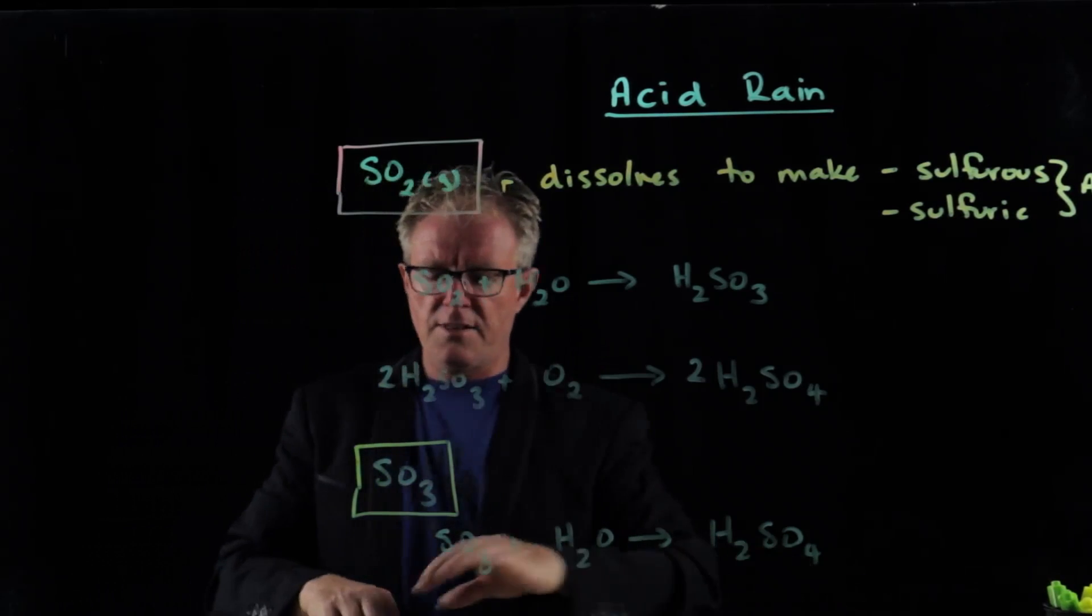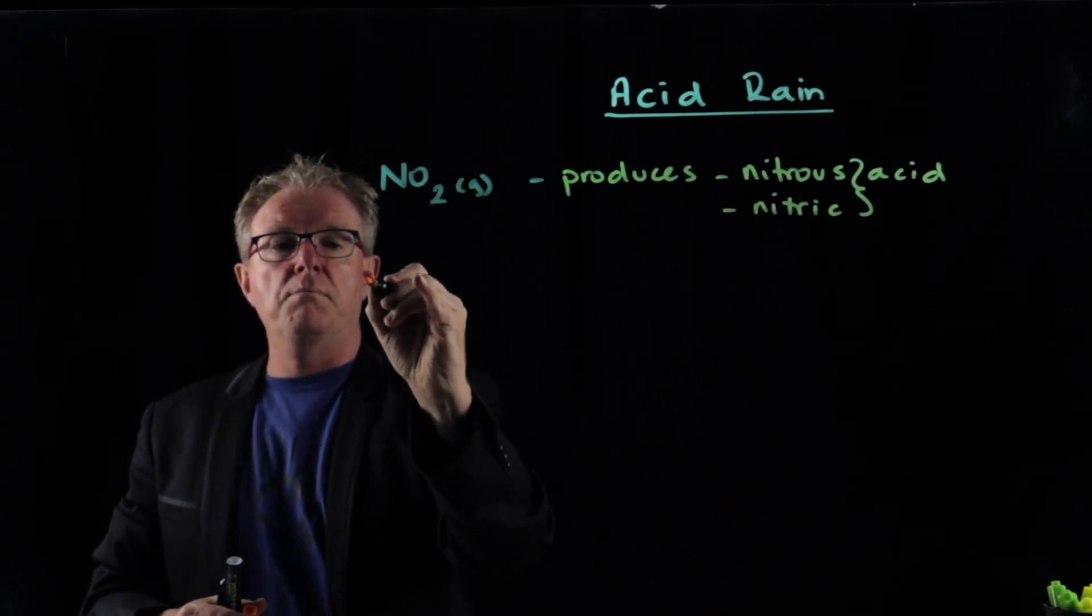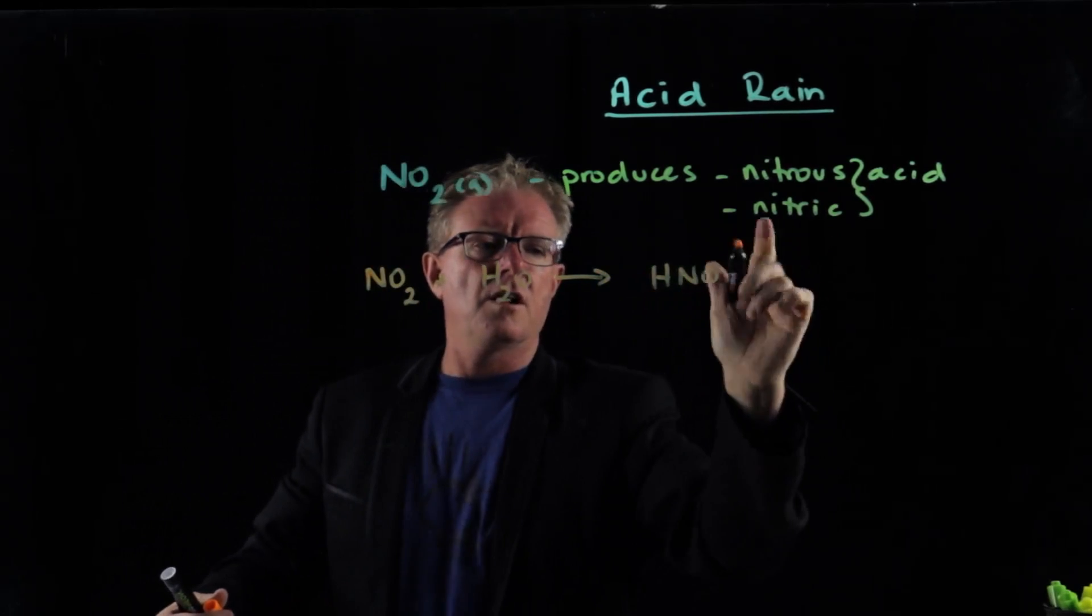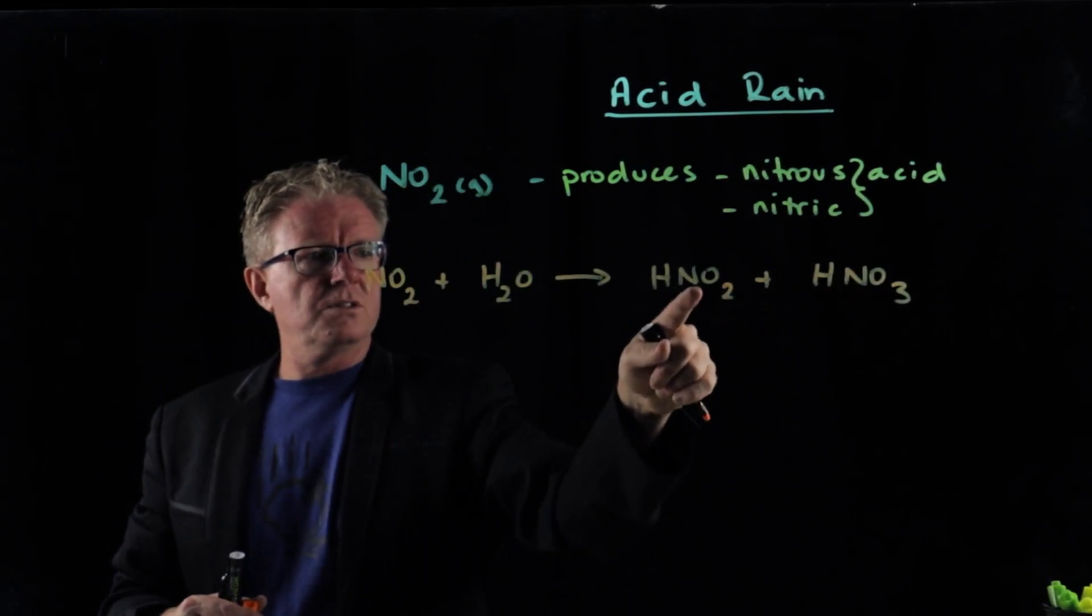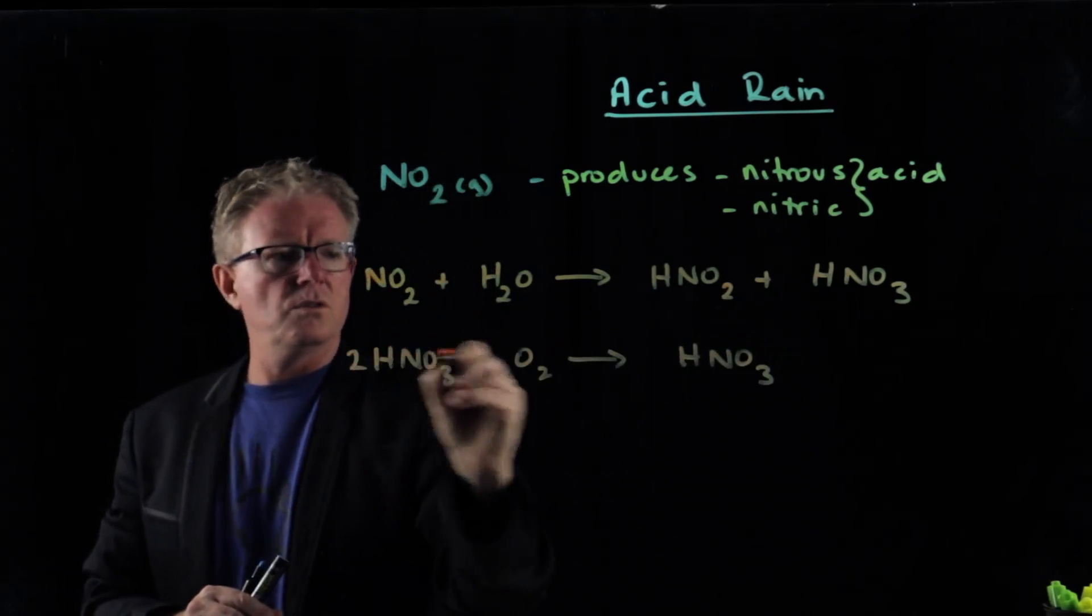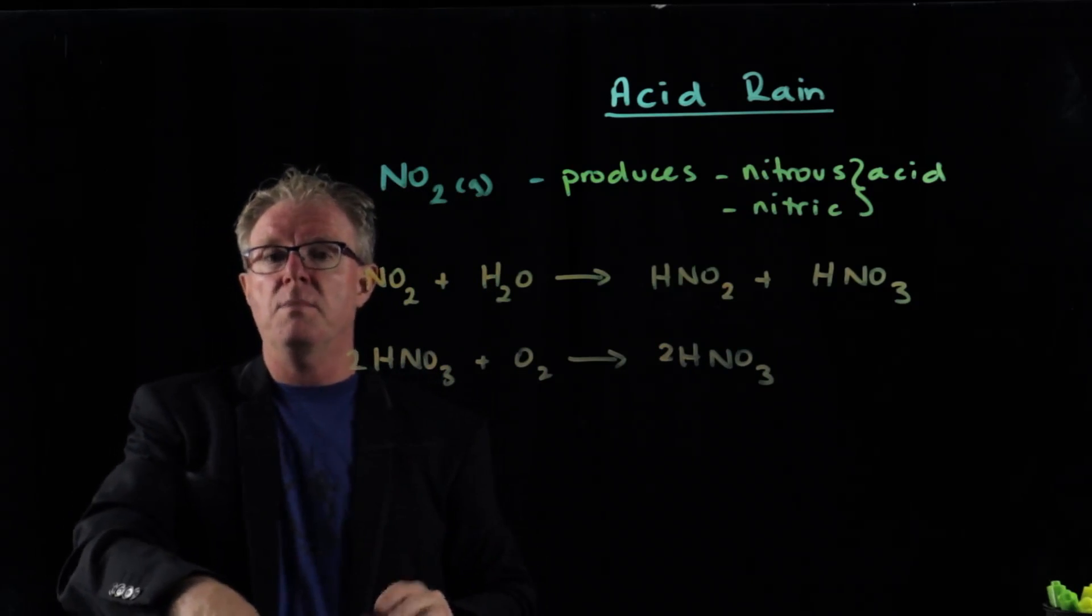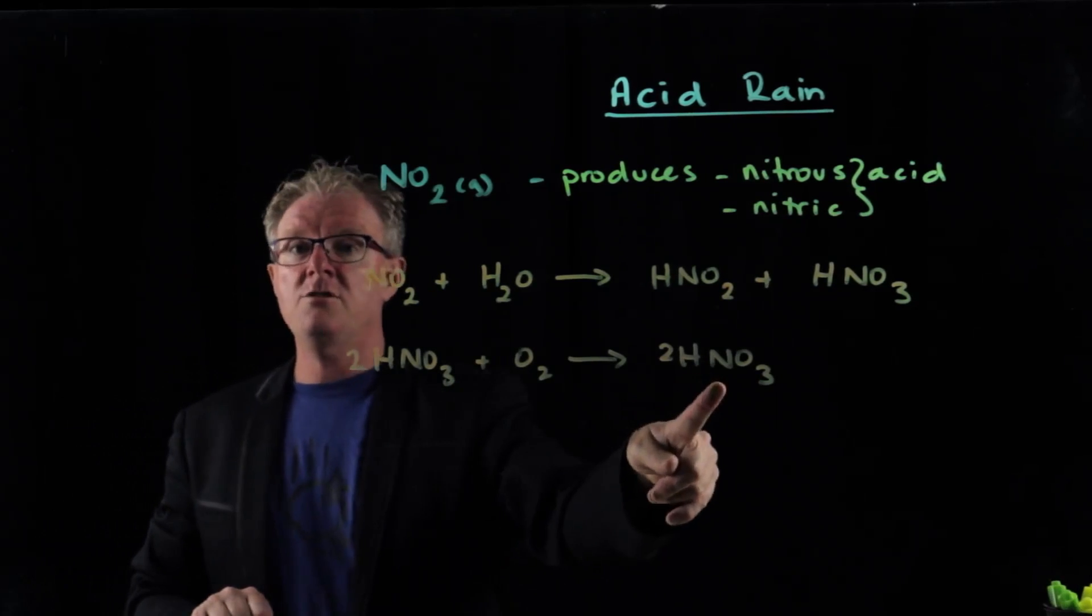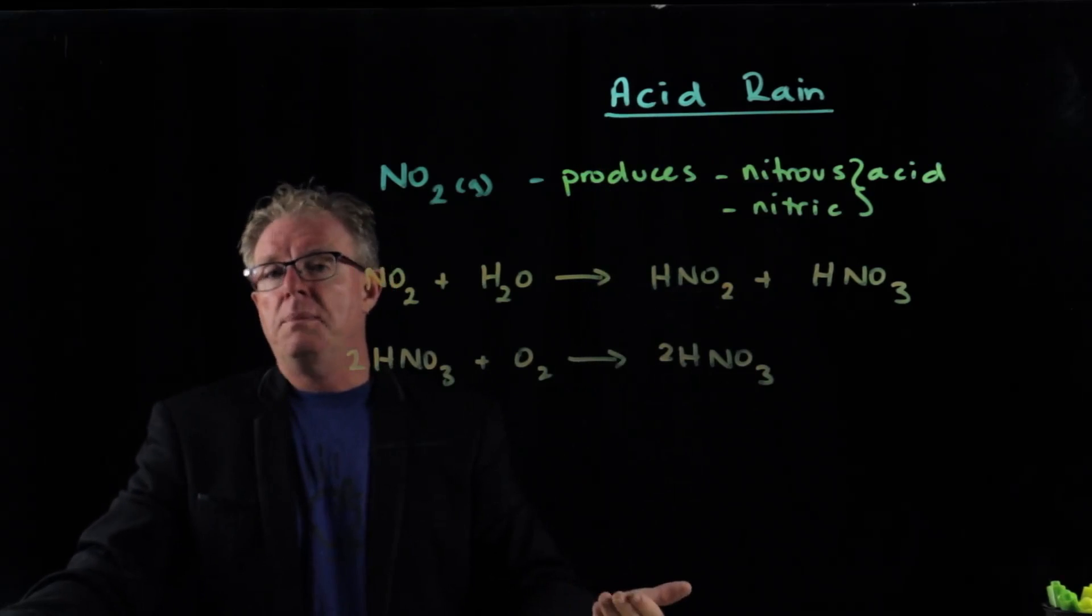Here we have our nitrogen dioxide, our brown poisonous gas. If that reacts with water it will make nitrous and then nitric acid. It'll produce both of these acids. That one there can also just react with oxygen and that produces nitric acid as well. So we can see that all the gases we've been talking about, carbon dioxide gas makes carbonic acid, sulfur dioxide and sulfur trioxide making our sulfuric acid, and then our nitrogen dioxide will end up making eventually our nitric acid. All these contribute to acid rain because they will dissolve in the rain water as it comes through causing the pH to go between four and five.